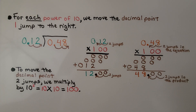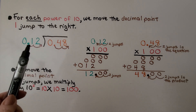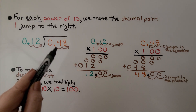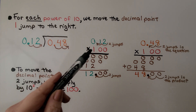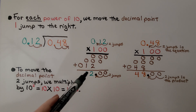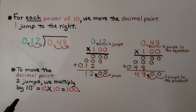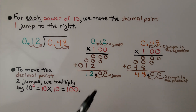For each power of 10, we move the decimal point one jump to the right. Here we have 12 hundredths. We're trying to divide 48 hundredths by 12 hundredths. We turn them into a whole number by moving this decimal point two jumps to the right. That means we're going to move this one two jumps to the right. 12 hundredths times 100 is equal to 12 as a whole number, and 48 hundredths times 100 is 48 as a whole number. To move the decimal point two jumps, we multiply by 10 to the second power — 10 times 10. That means it's going to be times 100.